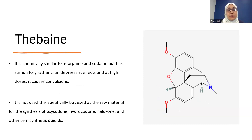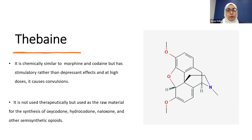The third alkaloid is thebaine. It is chemically similar to morphine and codeine but has a stimulatory effect rather than a depressant effect. It is not used therapeutically but serves as a prodrug or precursor to synthesize semi-synthetic opioid drugs like oxycodone, hydrocodone, and naloxone.